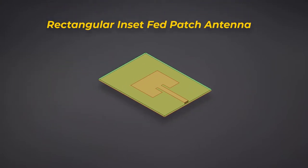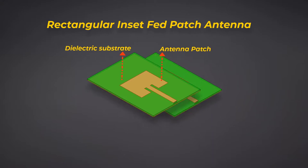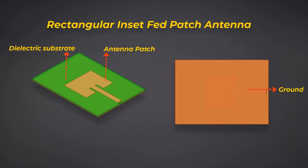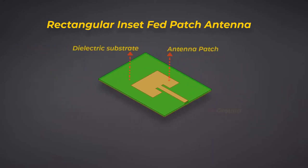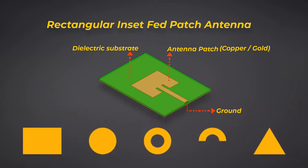In its most fundamental form, a MicroStrip Patch Antenna consists of a radiating patch on one side of a dielectric substrate and it has a ground plane on the other side. And the patch is generally made of conducting materials such as copper or gold and it could take any possible shape.